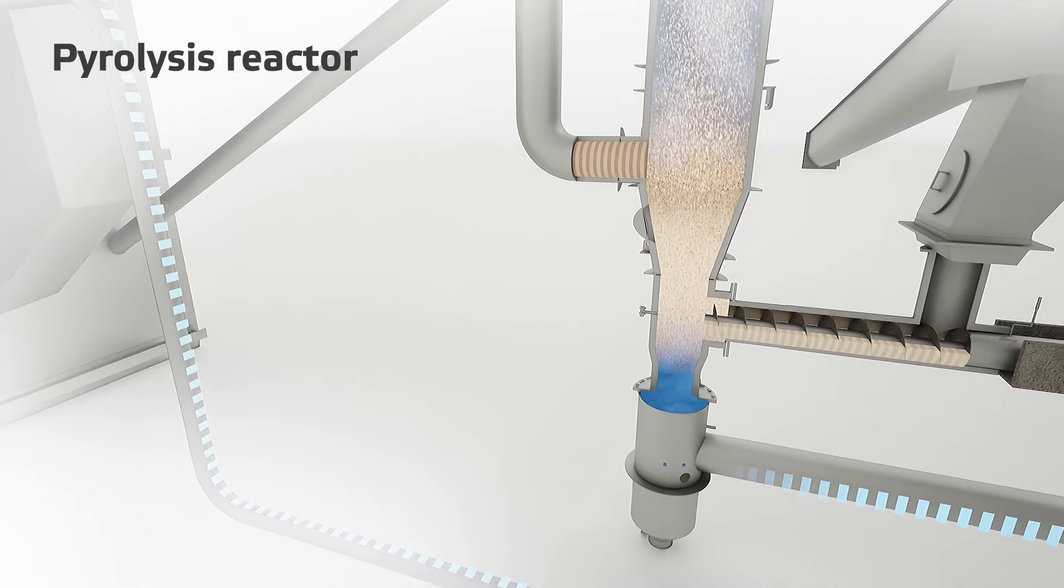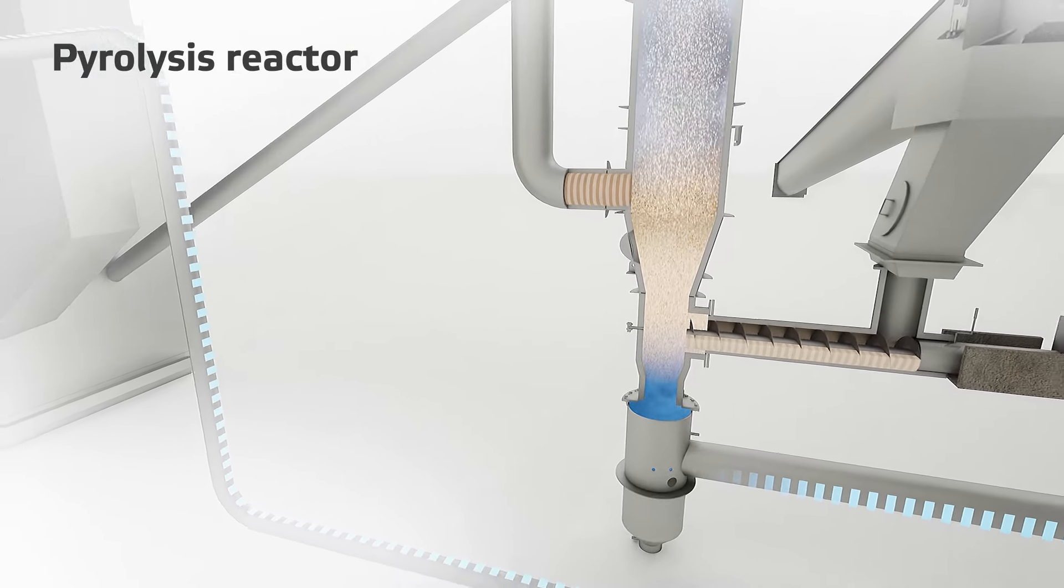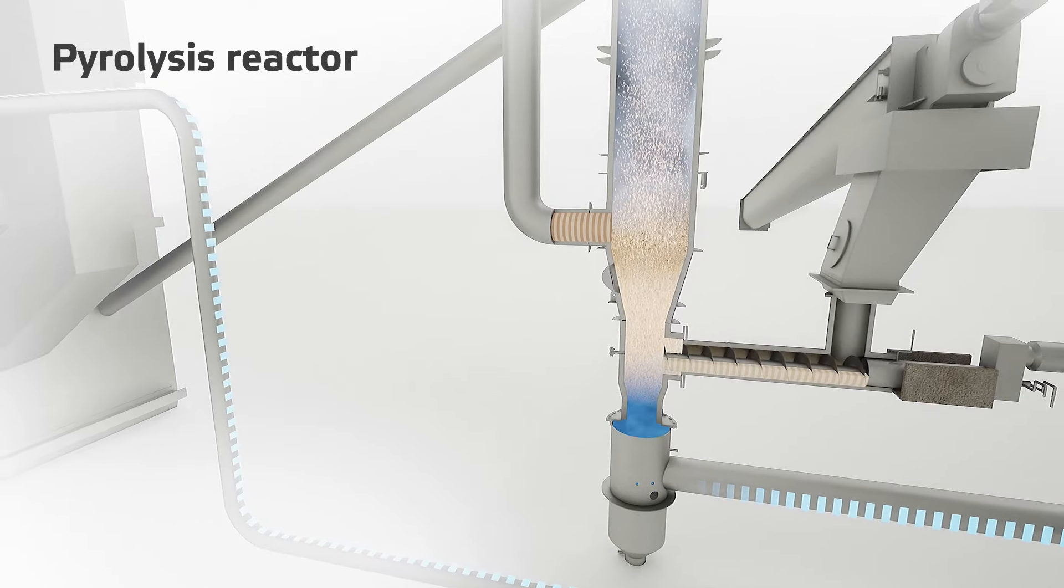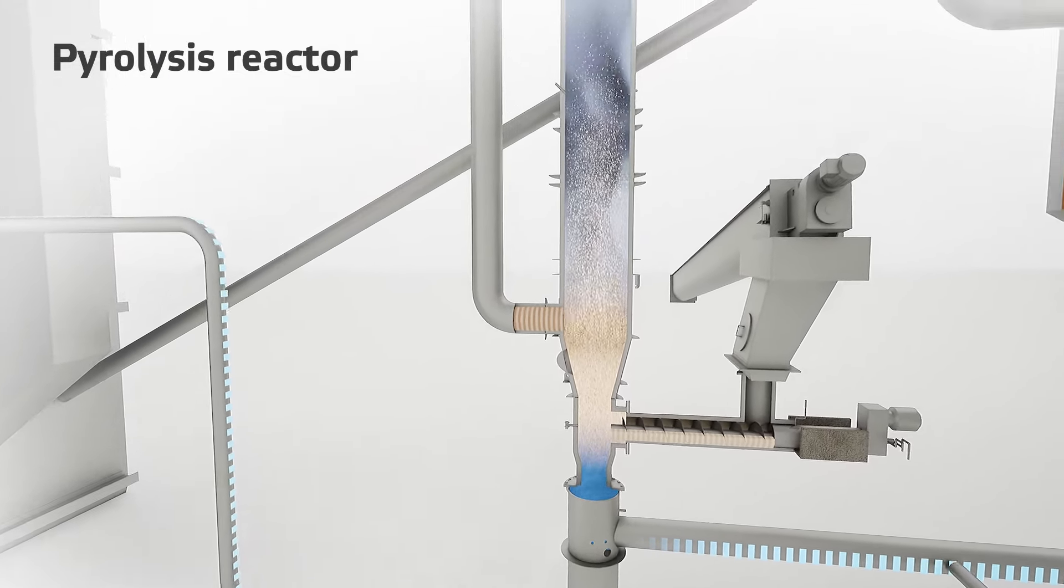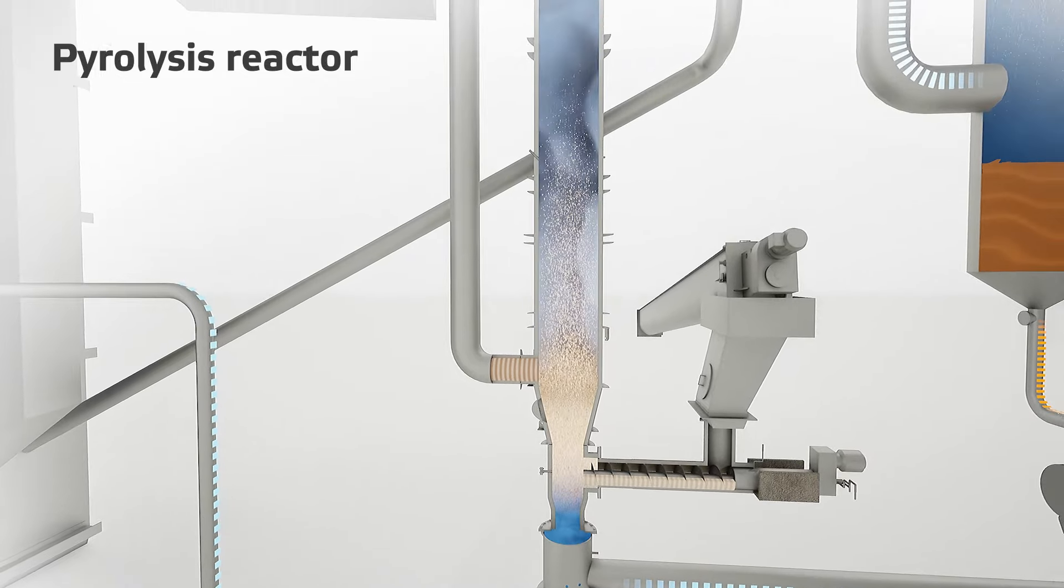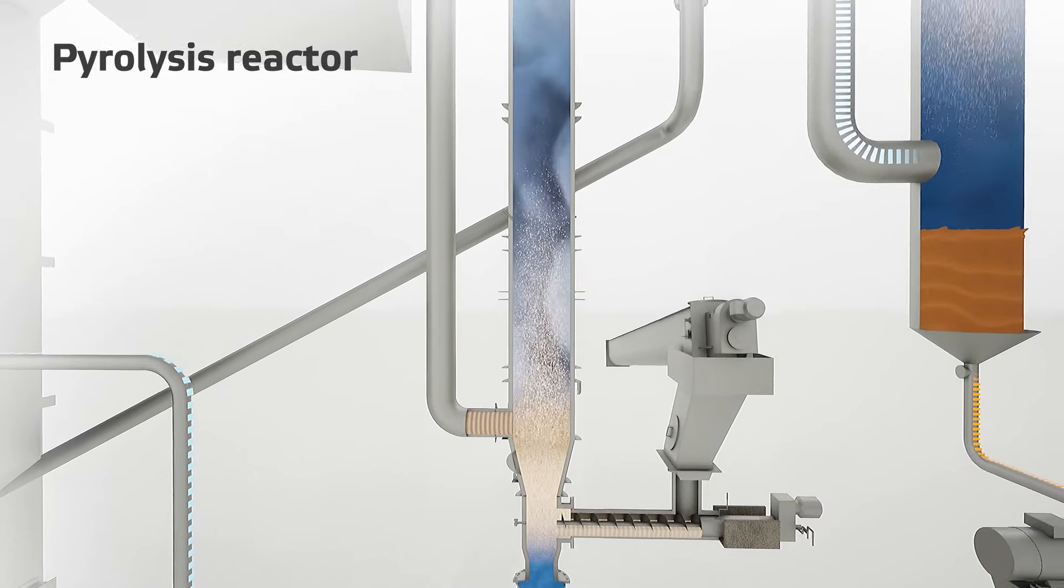Feedstock pyrolysis in an oxygen-free atmosphere decomposes to gases and biochar. The generated pyrolysis gases, biochar, and sand flow upwards with fluidization gas.